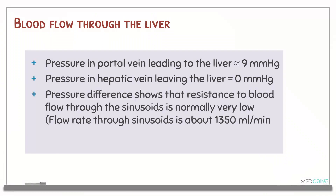The pressure in the portal vein leading to the liver is about 9 mmHg, and the pressure in the hepatic vein is 0 mmHg. This pressure difference shows that the resistance to blood flow through the sinusoids is normally very low, and the flow rate through the sinusoids is approximately 1,350 ml per minute.